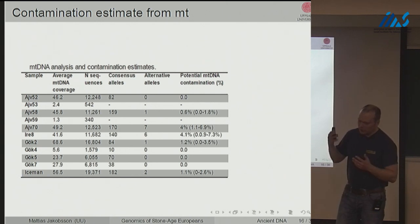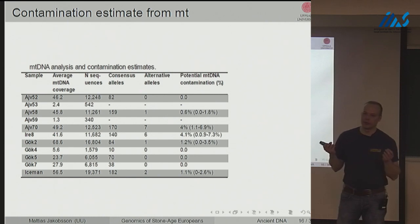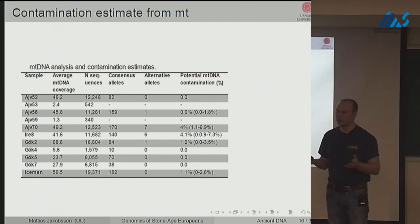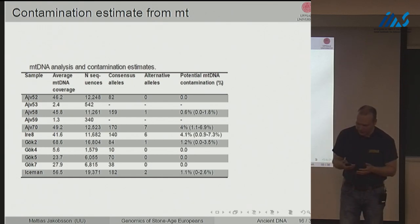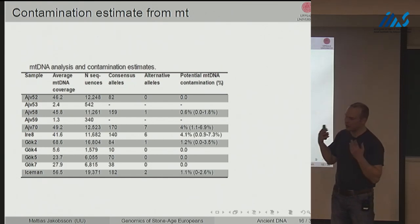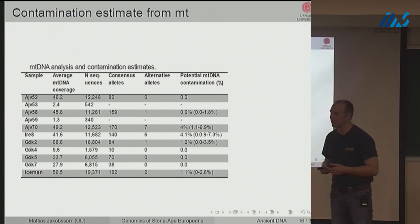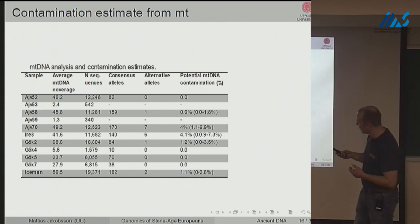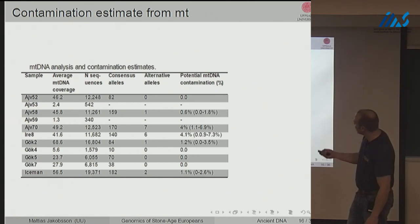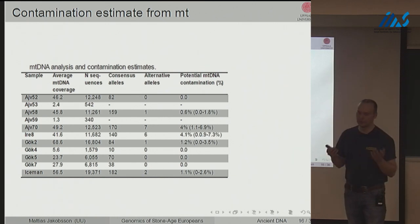Another useful tool is that humans have one mitochondrial type inherited from their mother — you're only supposed to have one type in your cells. If you find two mitochondrial types, that's a strong indication of contamination. We can quantify the consensus allele versus the deviant allele across ancient samples and make quantitative estimates of mitochondrial contamination levels.